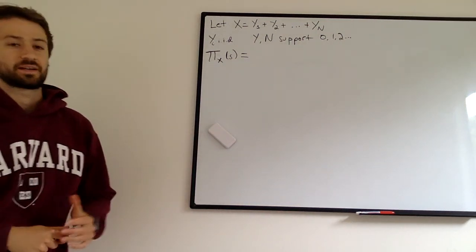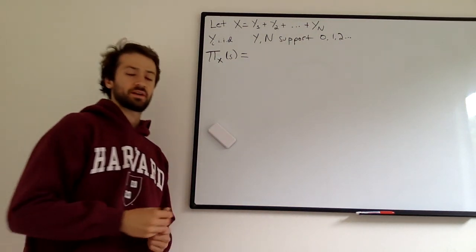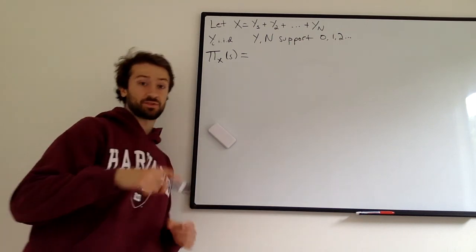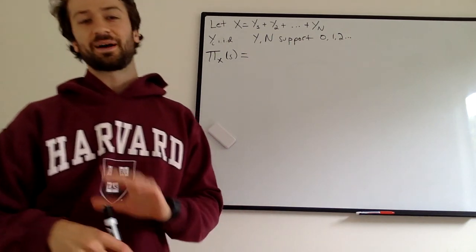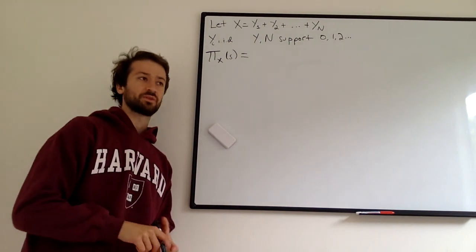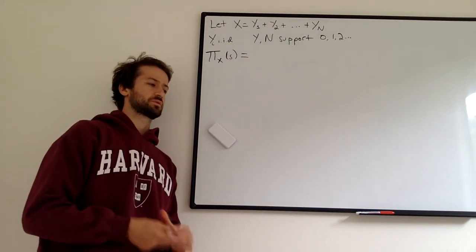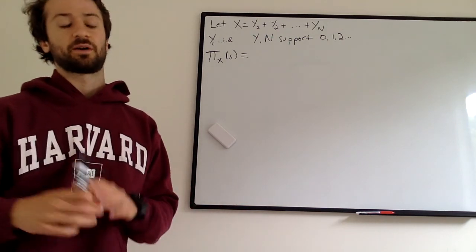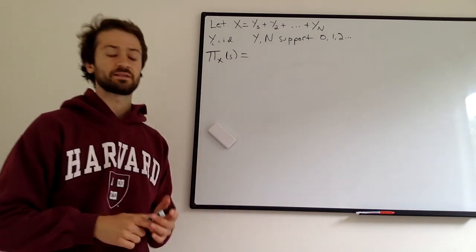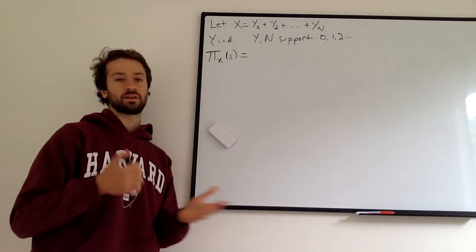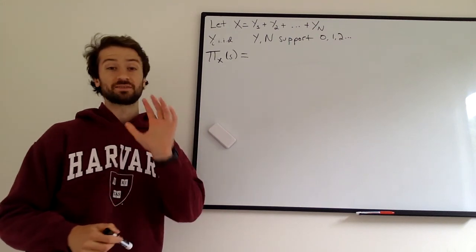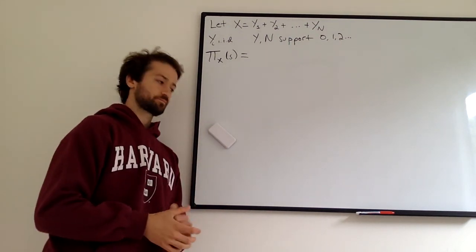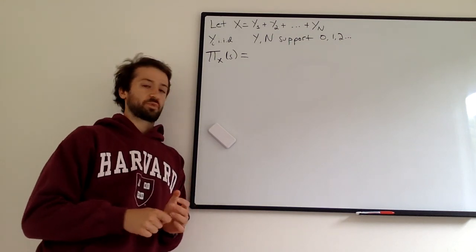In this video we're going to be talking about some cool applications of the probability generating function as it relates to a branching process. In the past couple videos, which we'll link to, we've defined a probability generating function — PGF for short — talked about some of its properties, and talked about how to solve it. Now we're actually going to see why it's useful and get to how we can use it when considering branching processes.